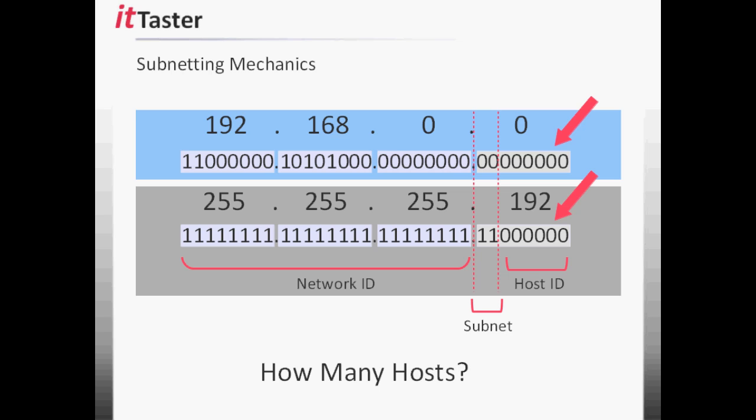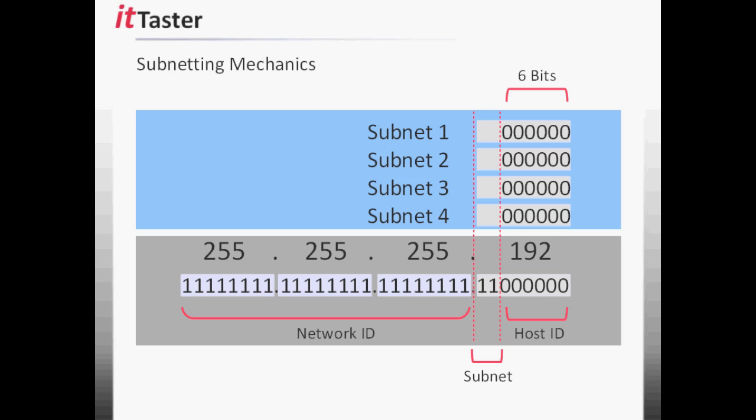We also need to know the number of hosts per subnet. To do this, we need to raise 2 to the power of the number of host bits, which in this example is 2 to the power of 6, which equals 64. But don't forget we must subtract 2 from this figure to allow for the network address and broadcast address, which leaves us with 62 hosts per subnet.